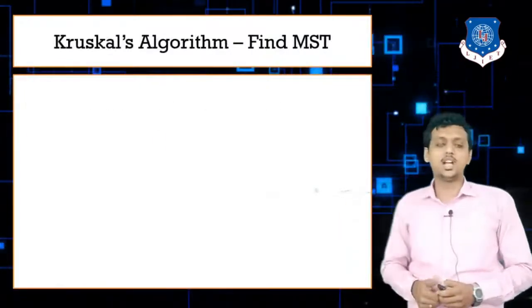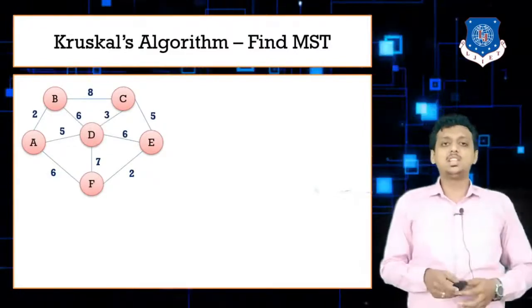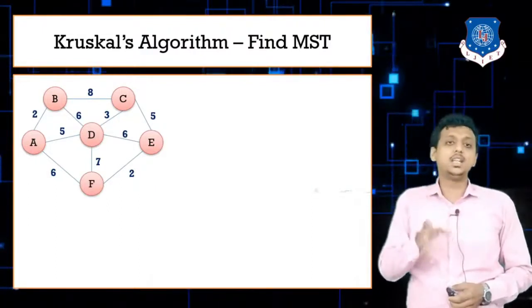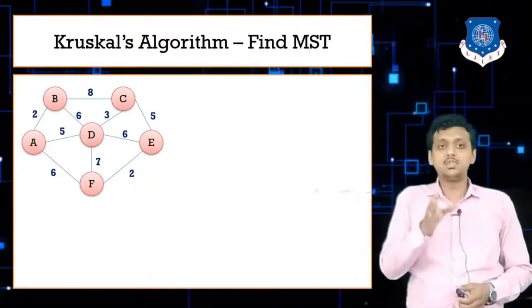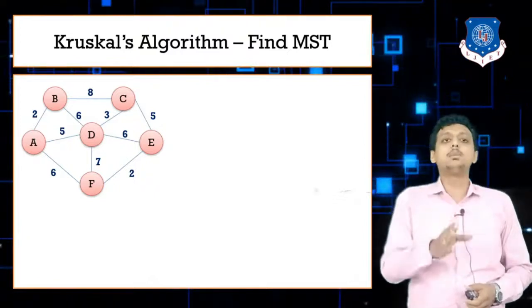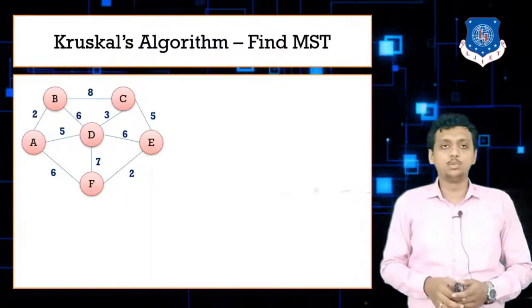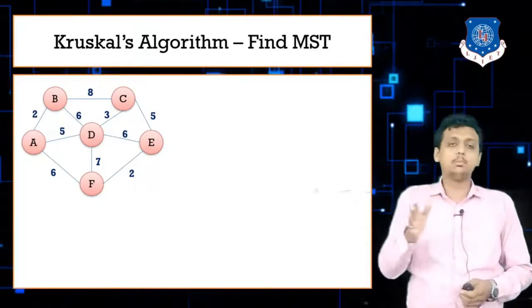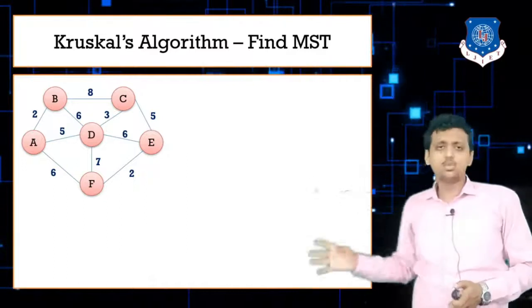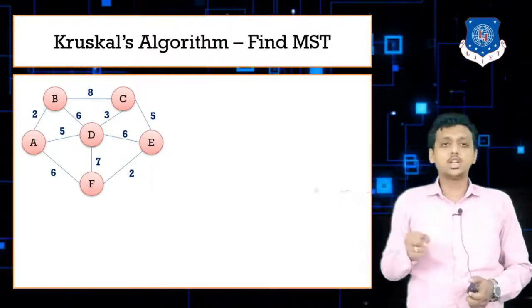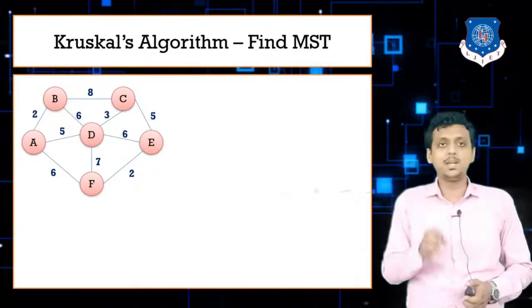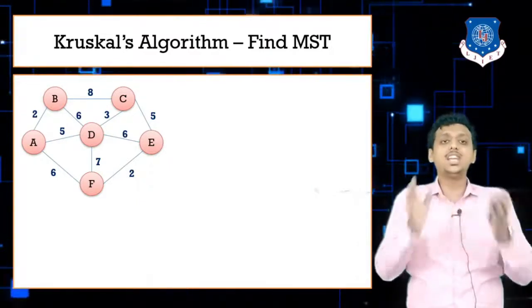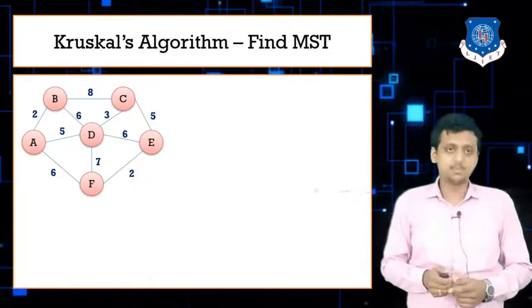Before starting with Kruskal's algorithm to find the MST, let me revise a few properties of the spanning tree. A spanning tree contains a minimum of V minus 1 edges. To make a spanning tree, you need to remove E minus V plus 1 edges. From V vertices, we can make V raised to V minus 2 spanning trees. Our goal is to find the minimum spanning tree — a spanning tree that contains the minimum weight.